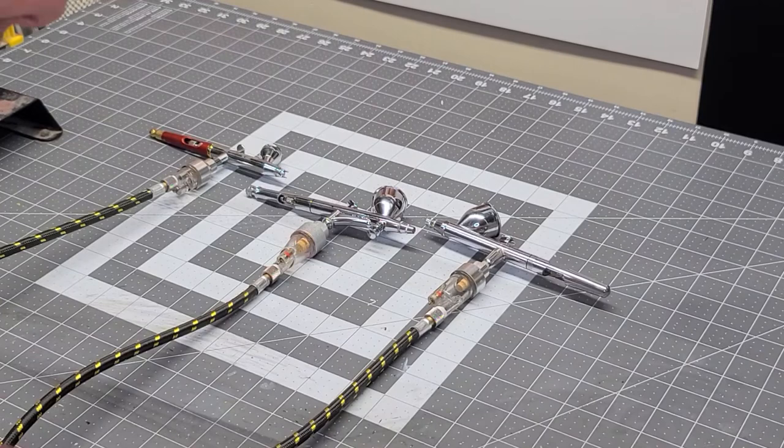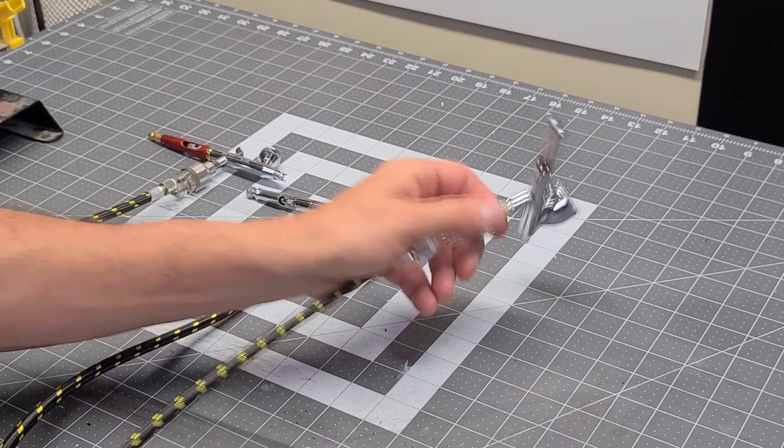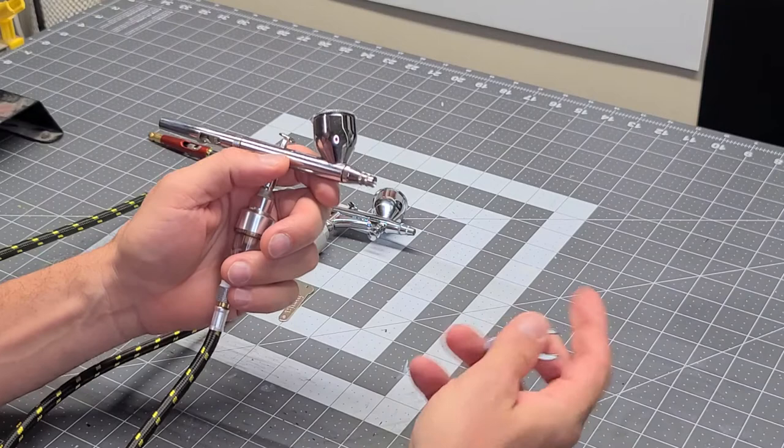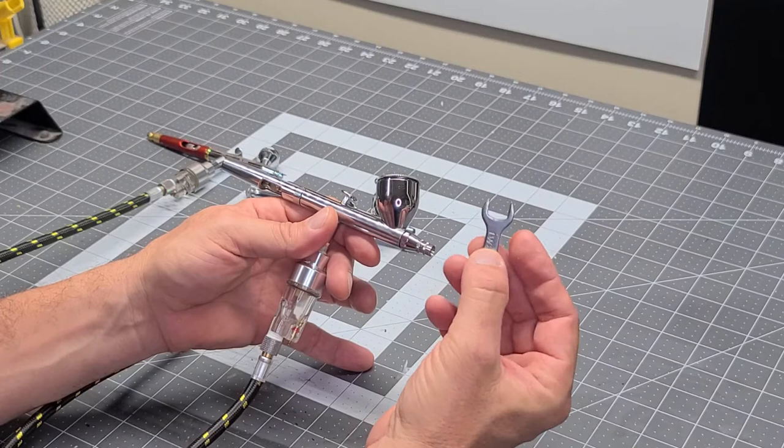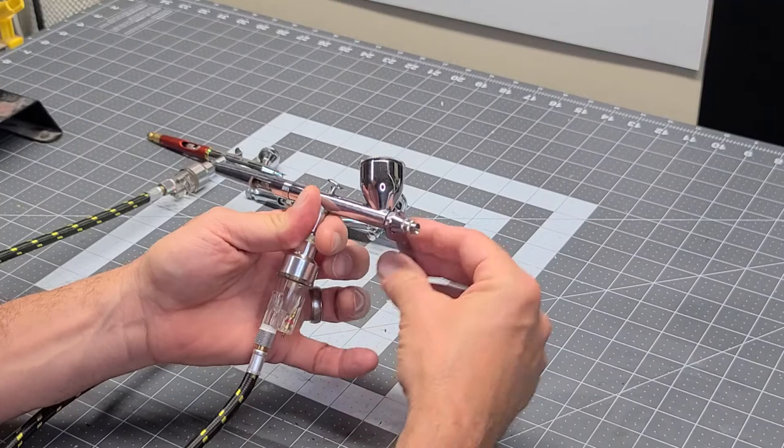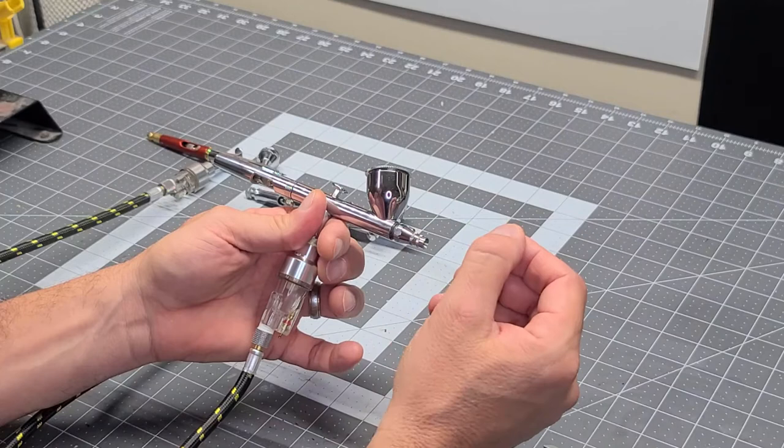All right, we're going to quickly break down all three of these guns, show you the inner workings of them, and explain some of the features. We're going to start with the Eclipse, and the Eclipse comes equipped with a wrench. You're going to see that two of these guns have tooling with them or need tools to take them apart and put them back together where the Infinity doesn't. The Eclipse comes with your wrench. The important part of any nozzle on an airbrush is that you don't over-tighten it. They just need to be snug tight. What I mean by snug tight is a little past what your finger pressure can do.